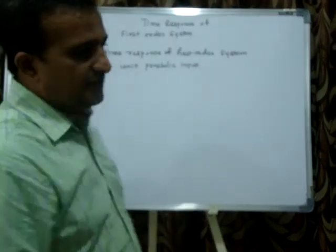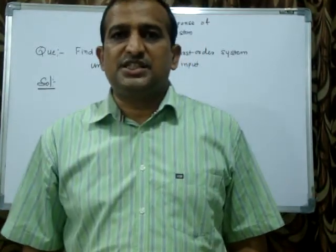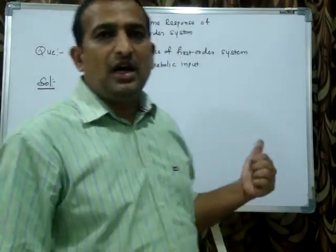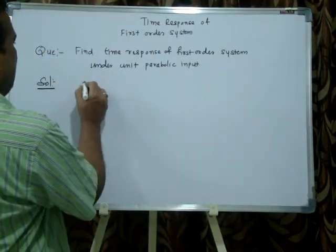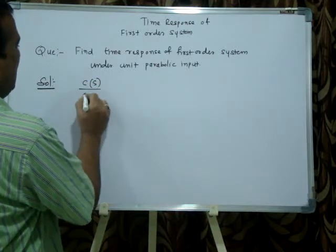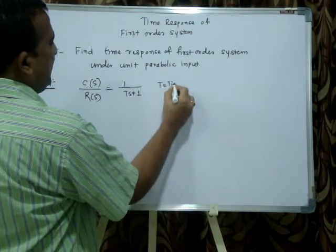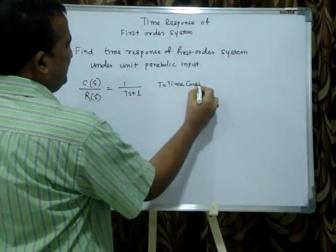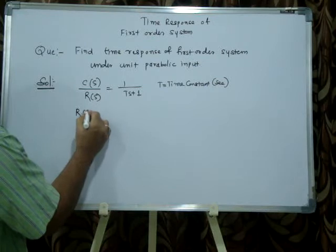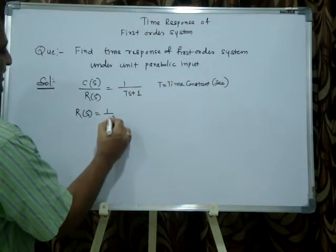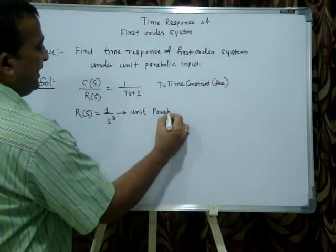We know that for a first order system, the standard form of transfer function is C(s) divided by R(s) equal to 1 by Ts plus 1, where T equals the time constant in seconds. So I will write C(s)/R(s) = 1/(Ts+1). Now I will take R(s) = 1/s³, which is given in the problem. This is called unit parabolic input.